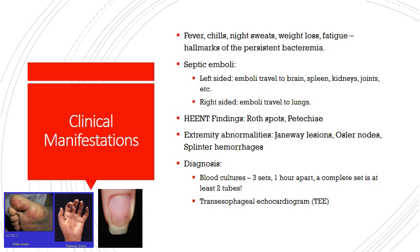Clinically, for subacute endocarditis specifically, you're going to see weight loss, fatigue, and night sweats — though these can occur with both acute and subacute. Sometimes it takes time for some of these symptoms to be reported. Fever and chills will be reported regardless. Fever, chills, night sweats, weight loss, and fatigue are all nonspecific symptoms, but they are all associated with bacterial endocarditis, and they are hallmarks of this persistent bacteremia.